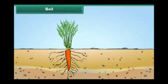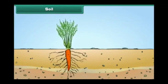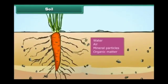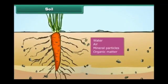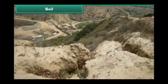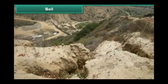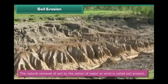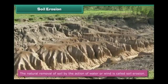Most soils contain four basic components: water, air, mineral particles, and organic matter. But the fertility of soil has decreased significantly. This is mainly because of soil erosion. Come, let us learn about it.